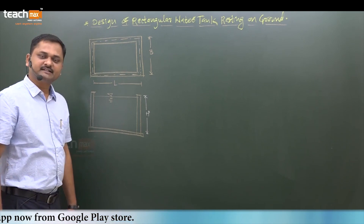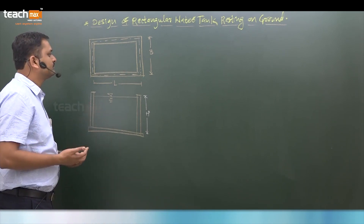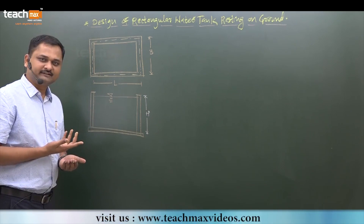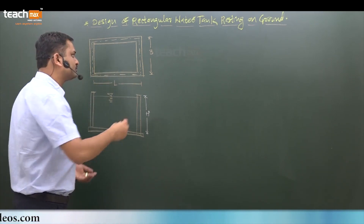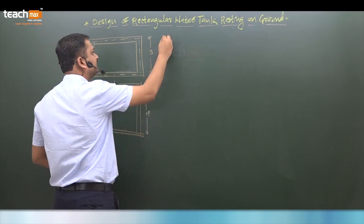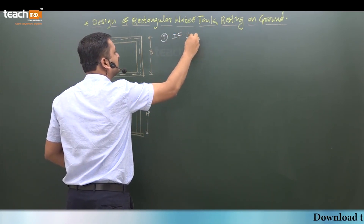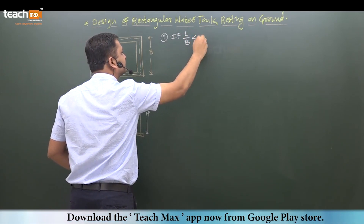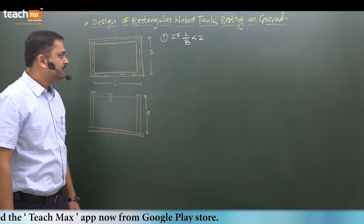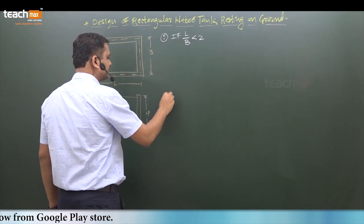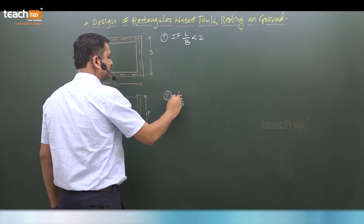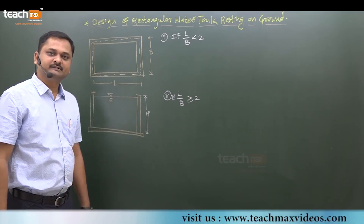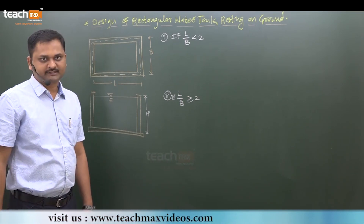Now, very important are the forces acting over the rectangular water tank. We can divide rectangular water tanks into two parts based on the L/B ratio. The first case is when L/B is less than 2, and the second case is when L/B is greater than or equal to 2. These are the two possibilities which may occur in rectangular water tanks.